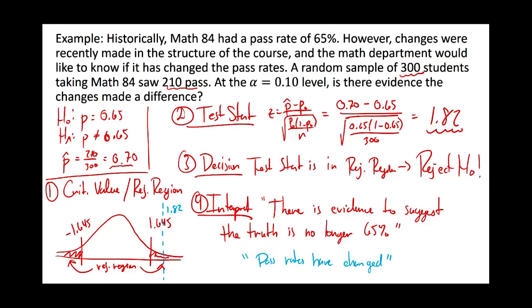The critical value gives you your rejection region, then you go get your test statistic, and that's how you make your choice.